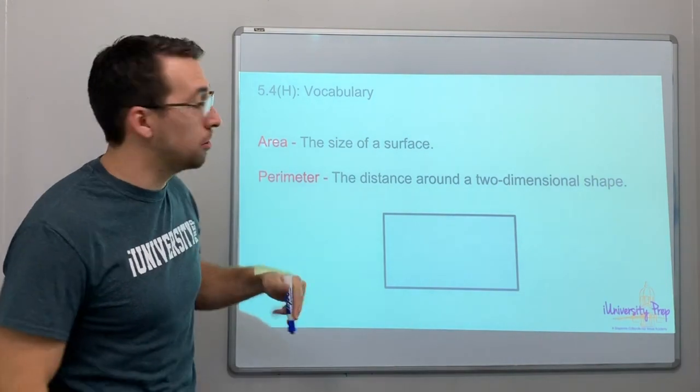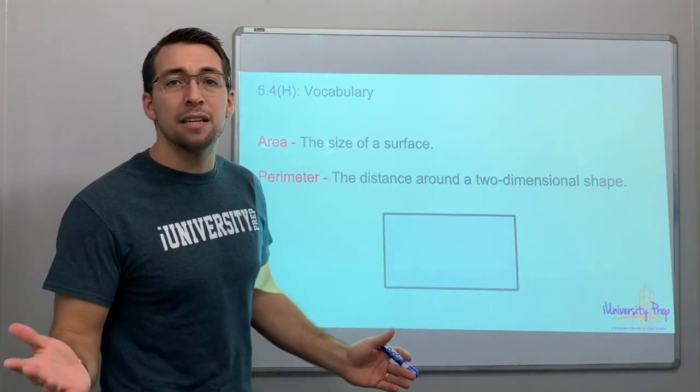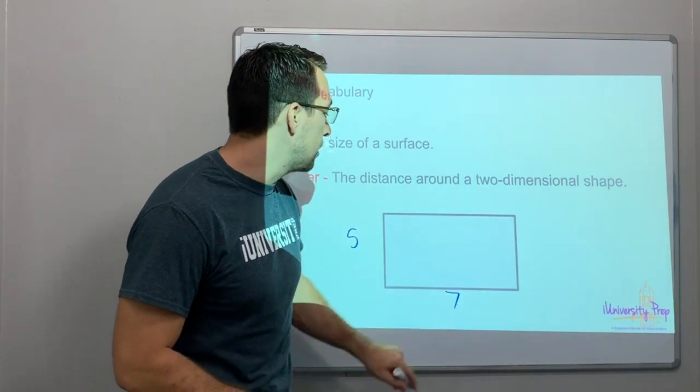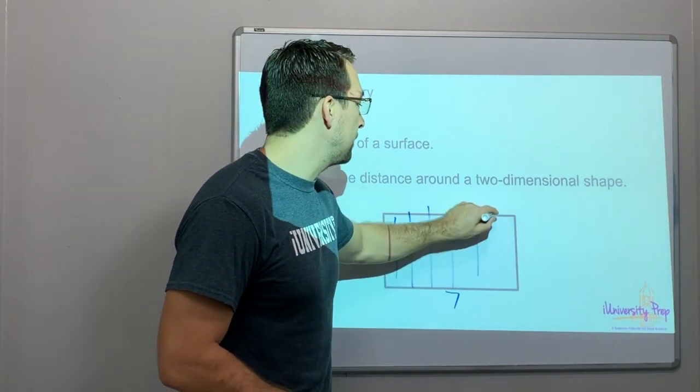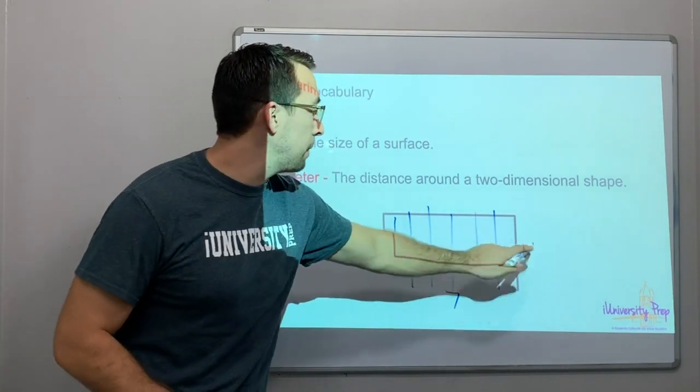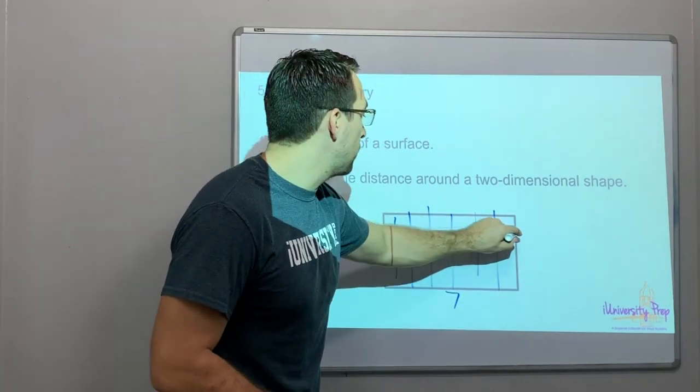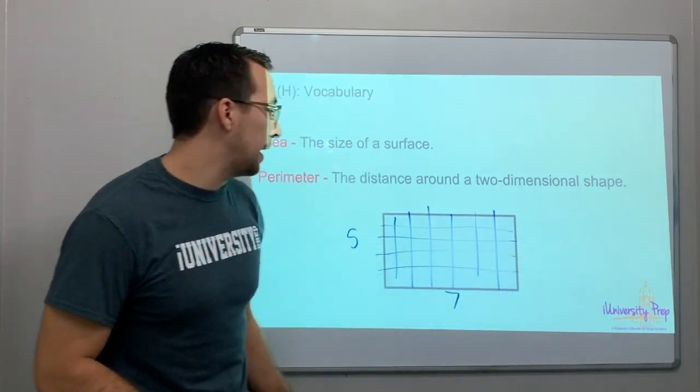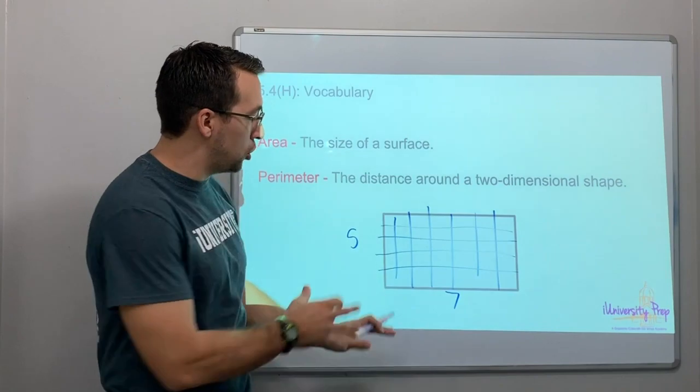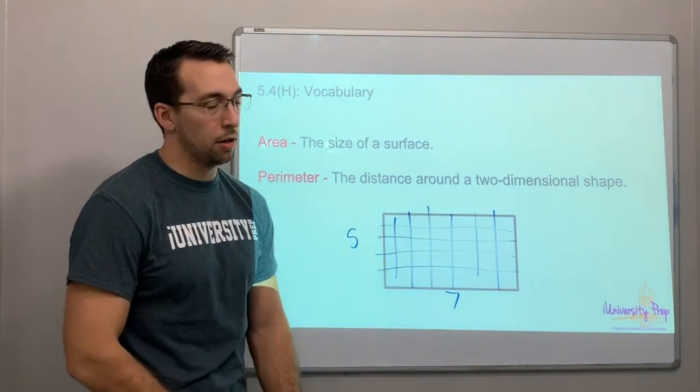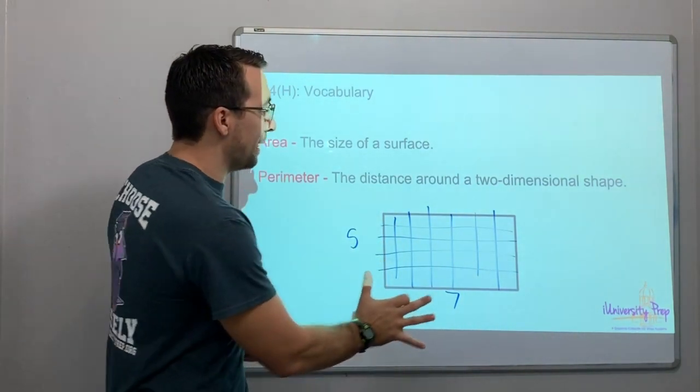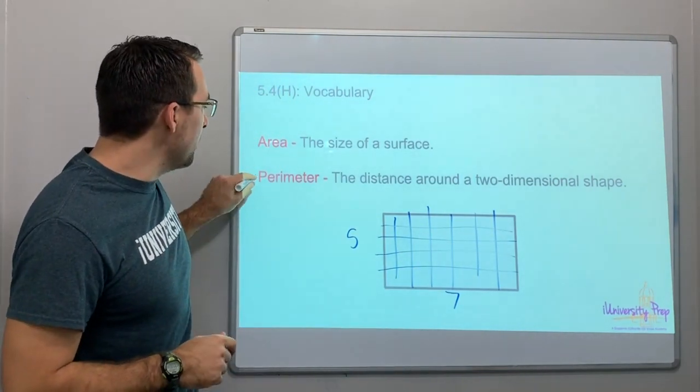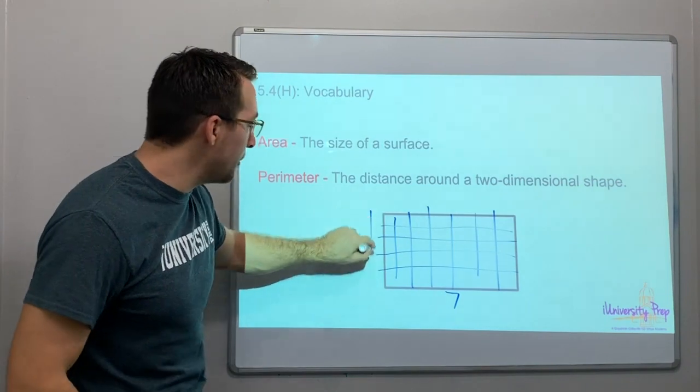Area is the size of a surface. Let's say this is 5 and this is 7. One, two, three, four, five, six, seven. There's seven spaces and five spaces - that's 35 square units. Area is the size of the surface. Perimeter is the distance around.